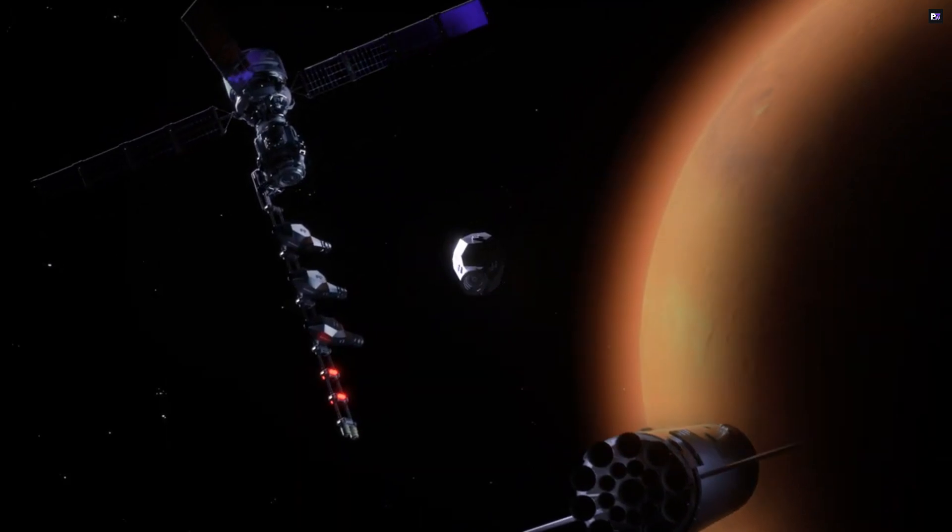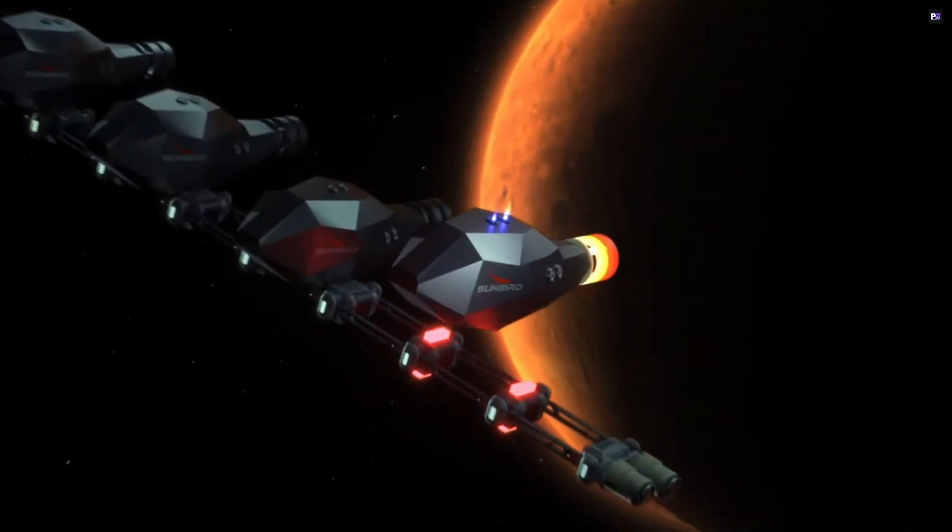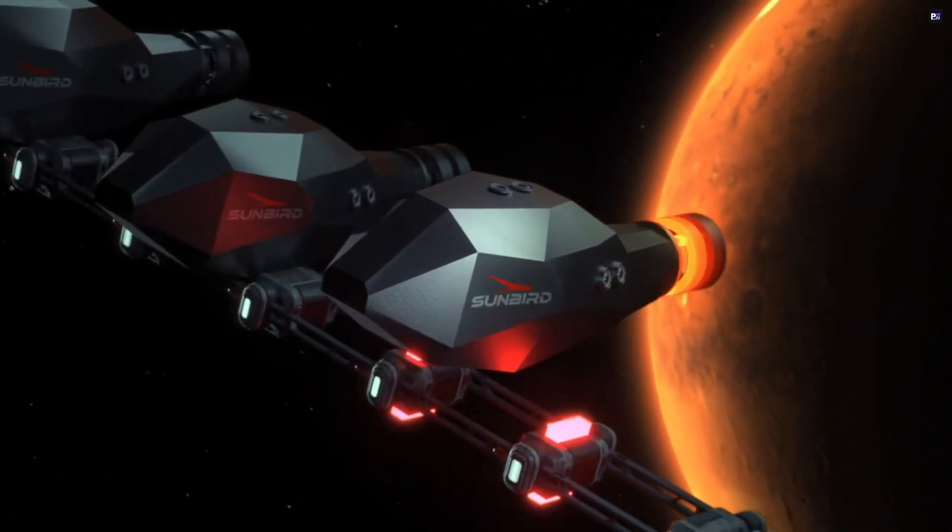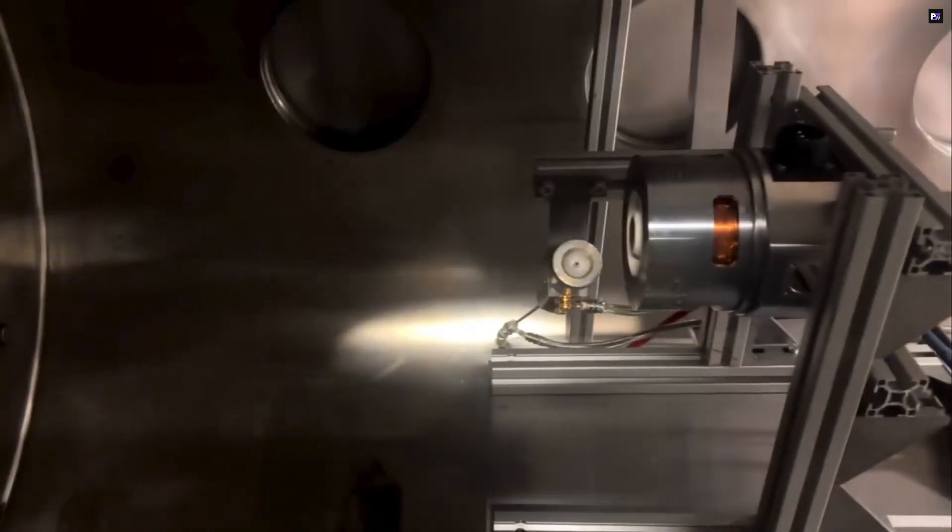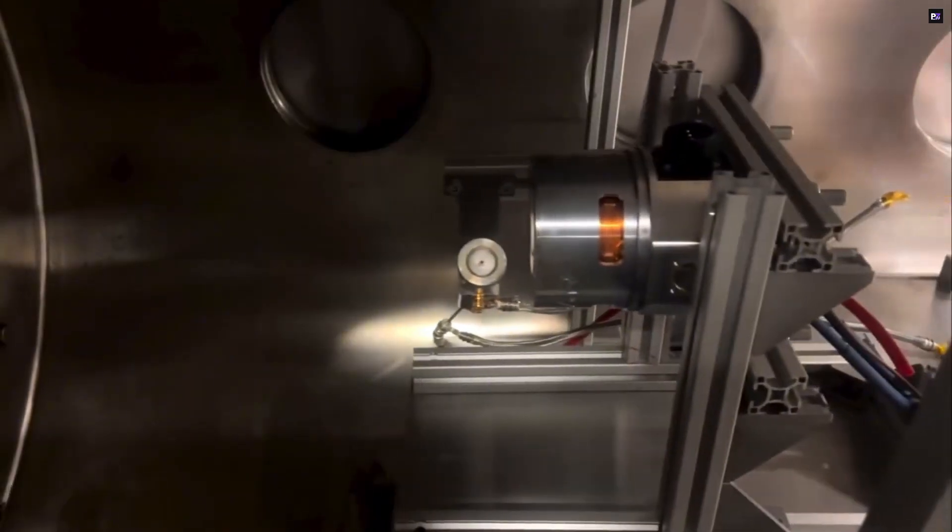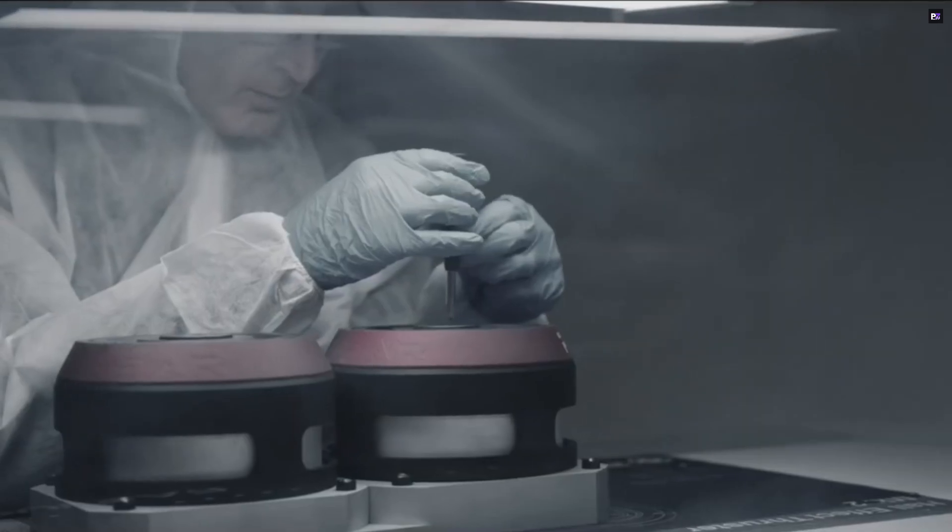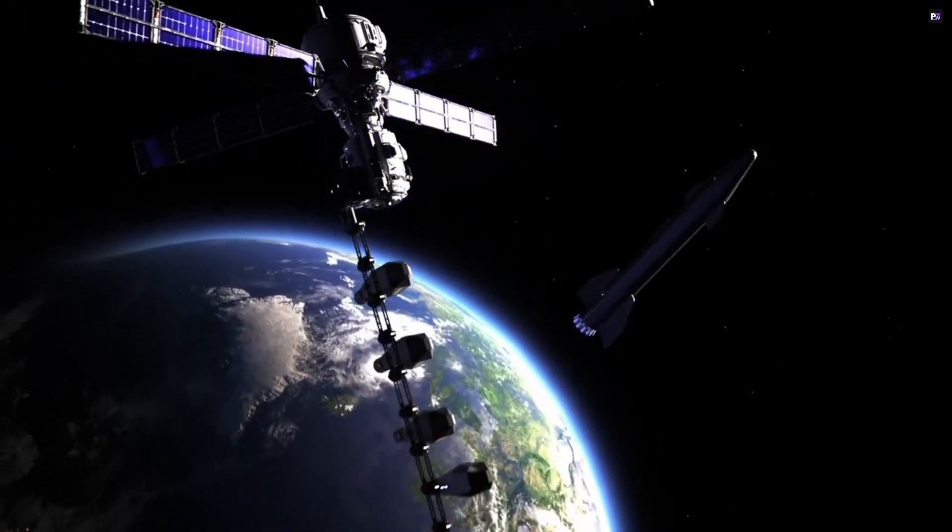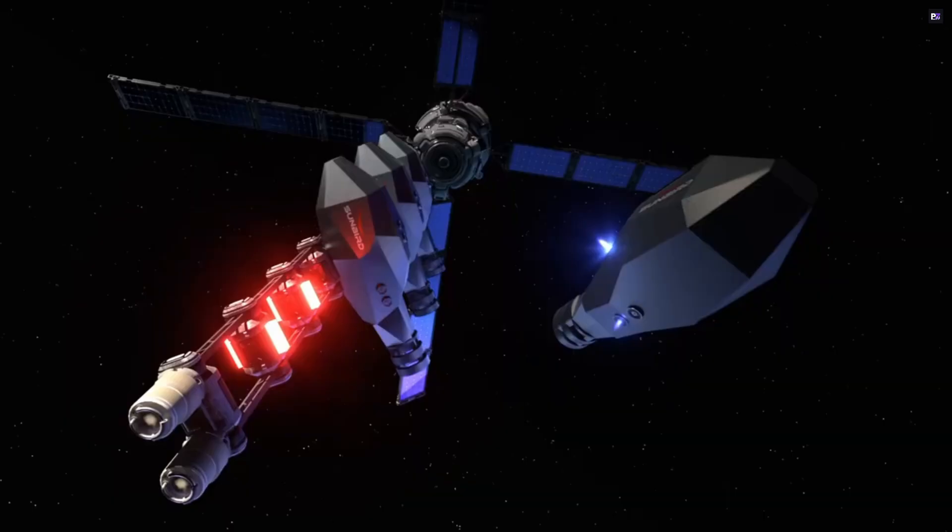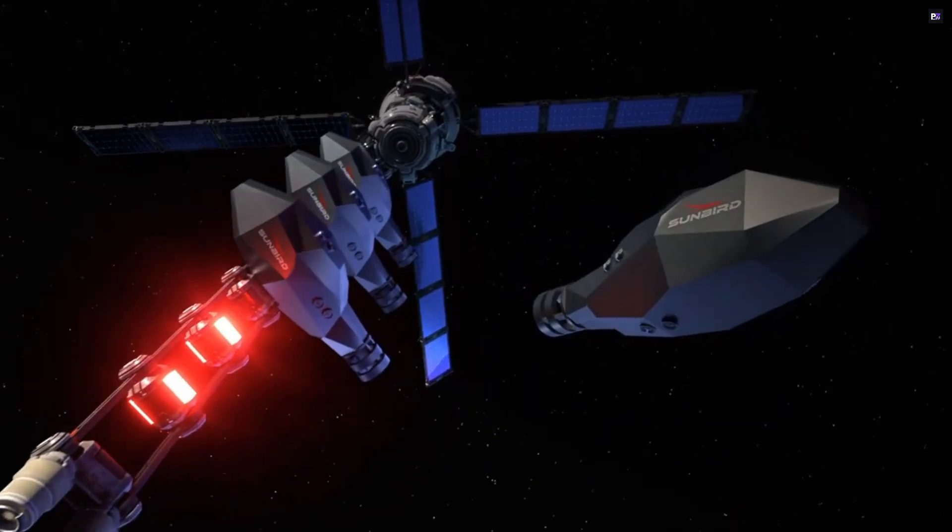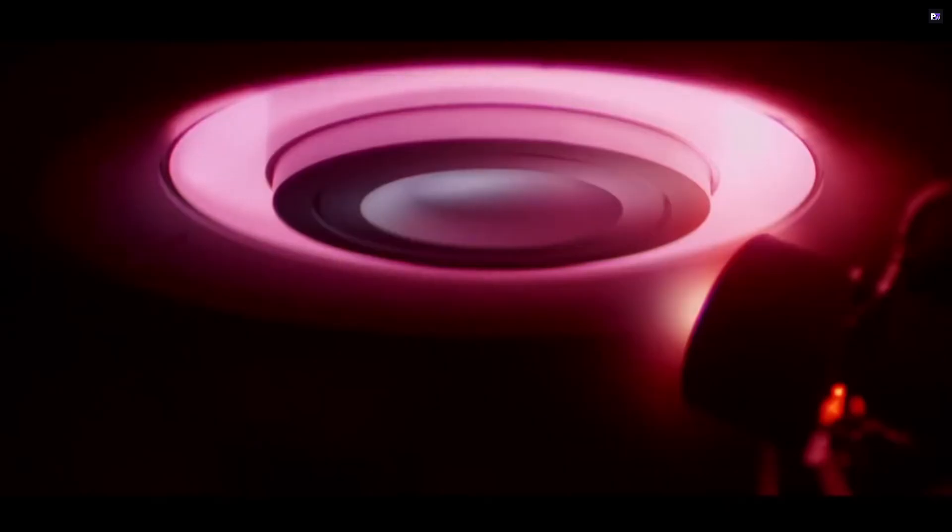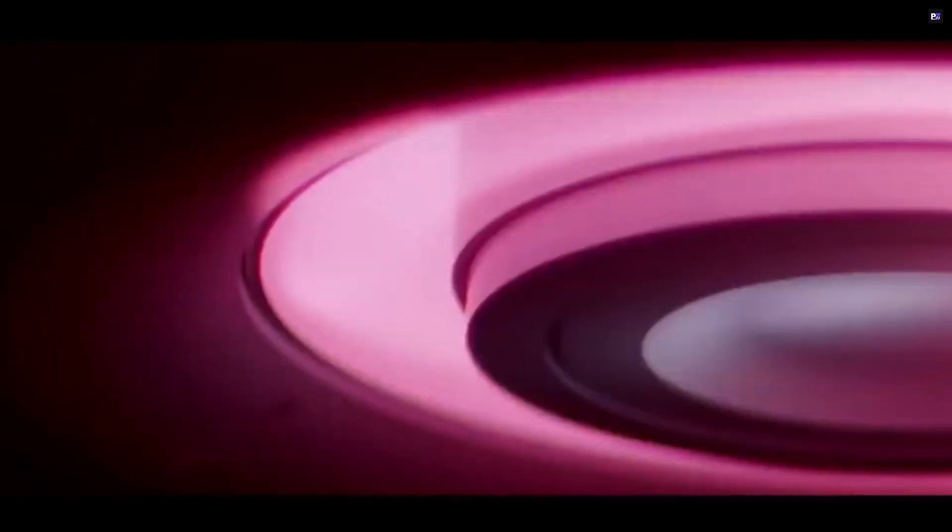Think about that. It dramatically cuts down the time needed for interplanetary travel, making distant destinations far more accessible. Given the harsh environment of deep space, the spacecraft is also meticulously shielded with high-density metal composites to protect against cosmic radiation. Its exhaust velocity is truly groundbreaking, reaching up to 223 kilometers per second, which directly translates to its incredible efficiency.